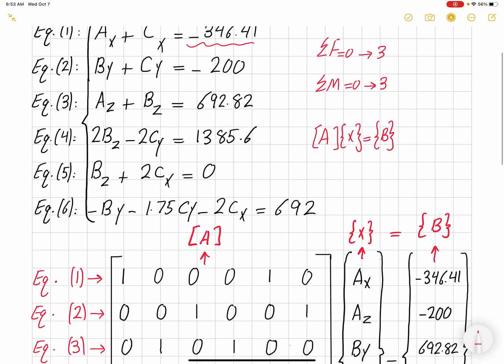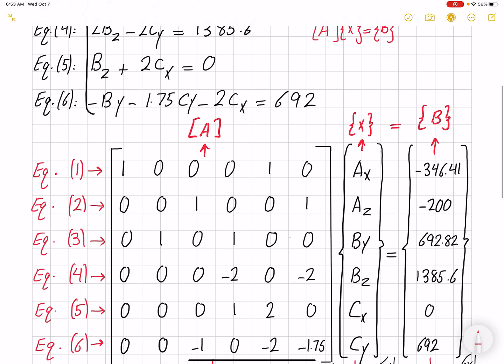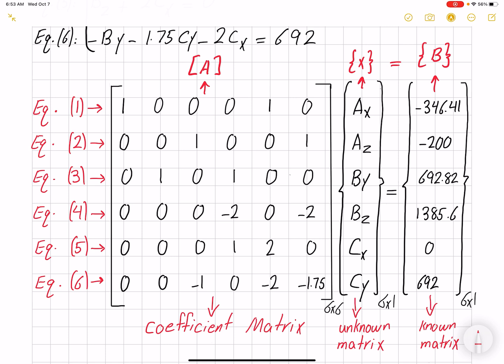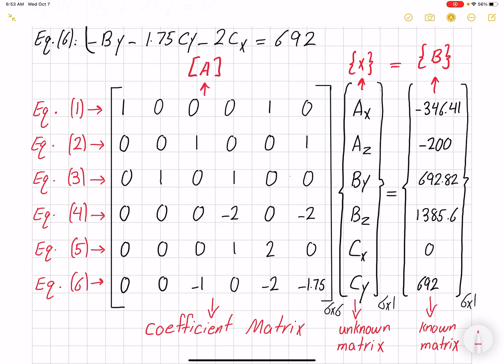Here I'm showing you my matrix A, matrix x, and matrix B. The x would be our unknowns, and here I'm listing my unknown variables from Ax to Cy. The order doesn't matter.